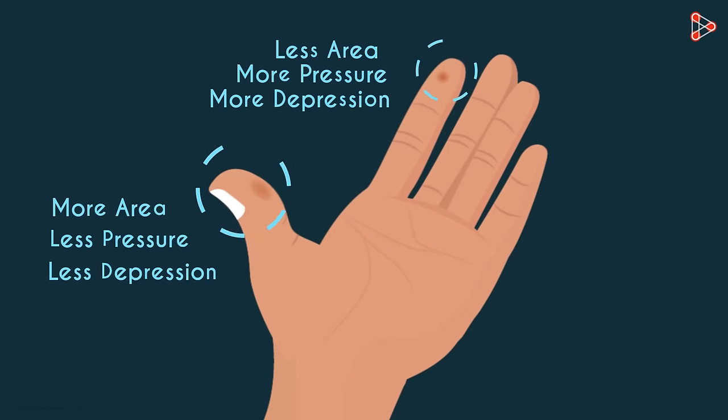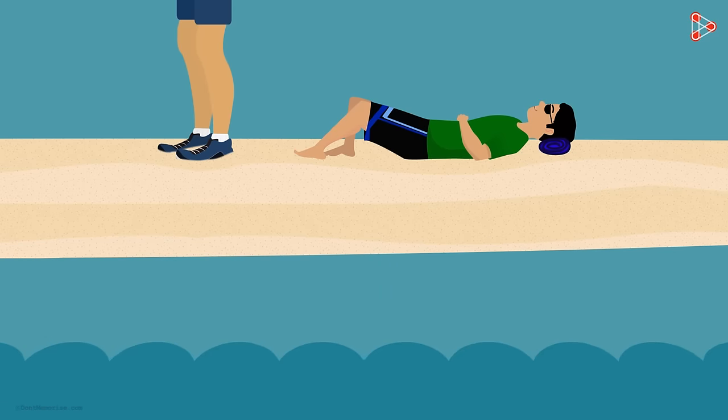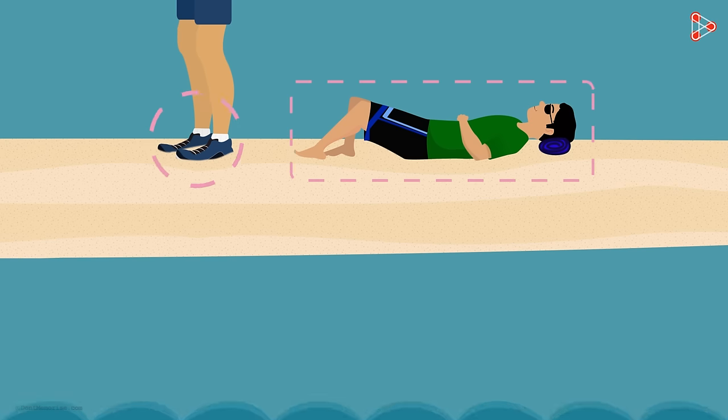Can you understand the second situation using this concept? In the second situation, the area on which your feet lie is lesser, as compared to the area on which your entire body lies.